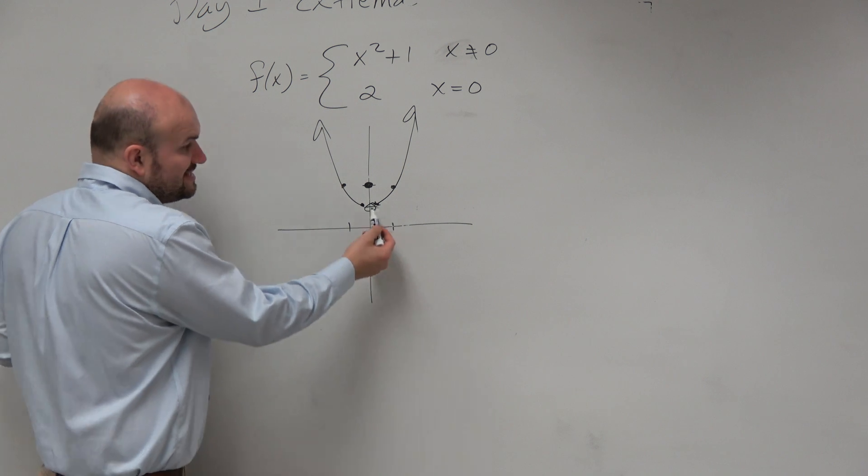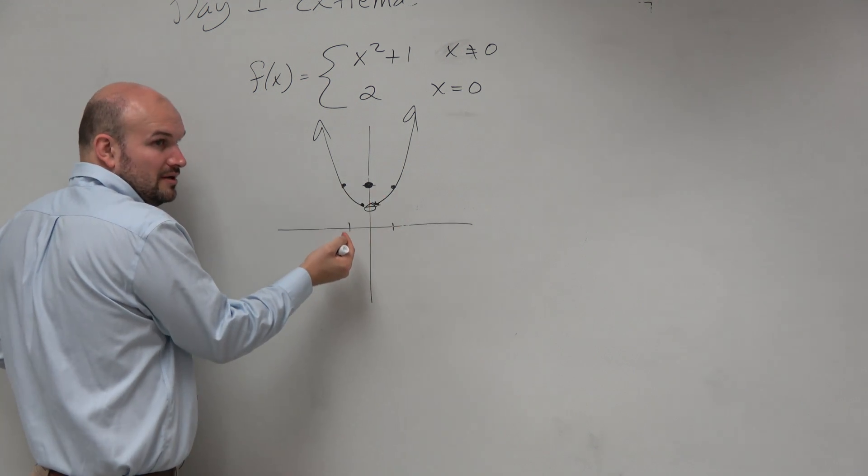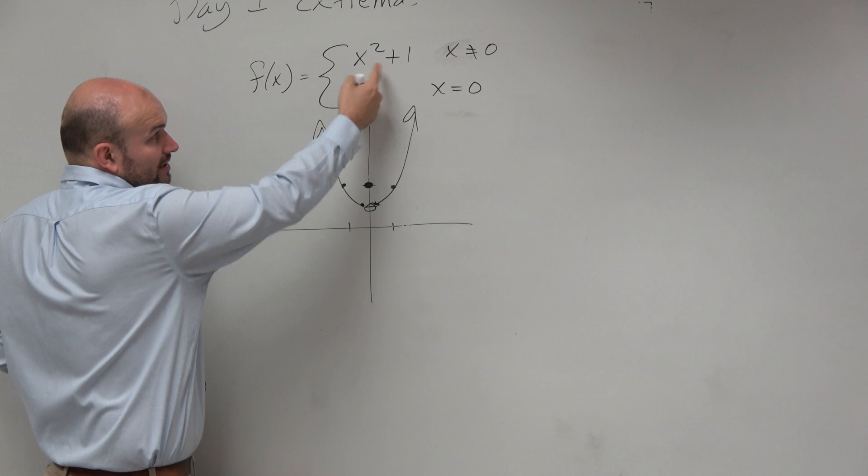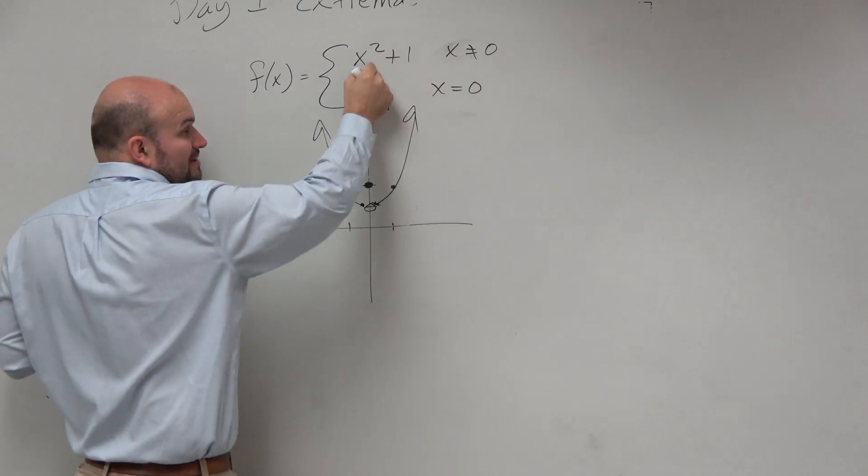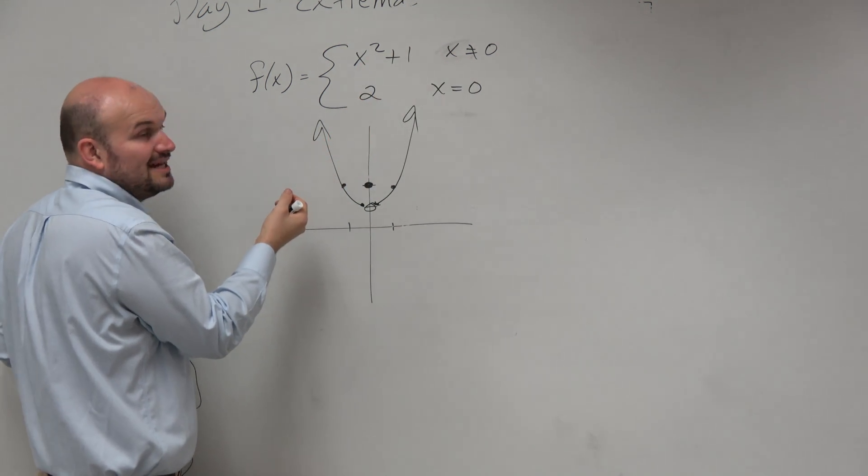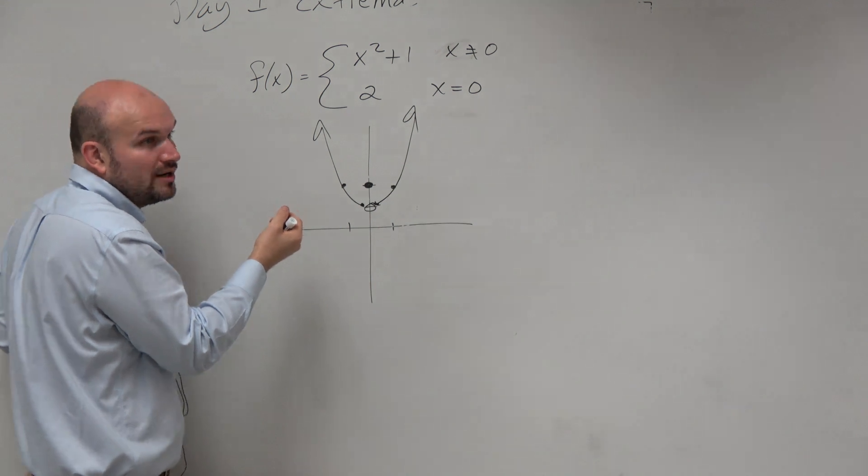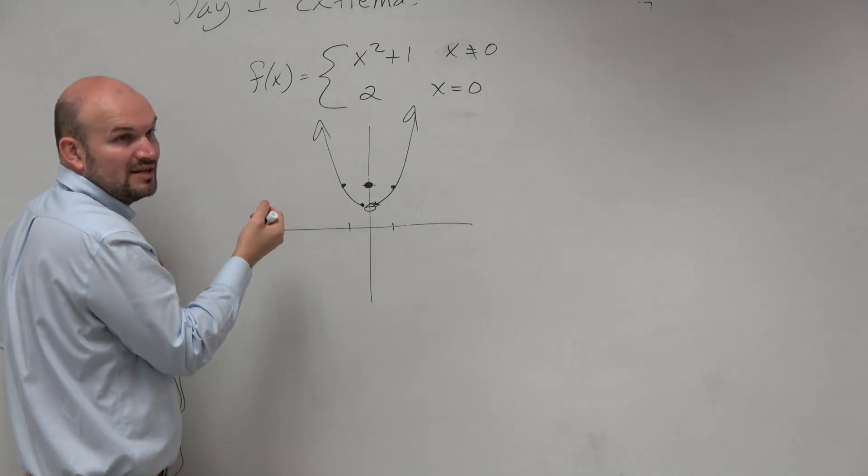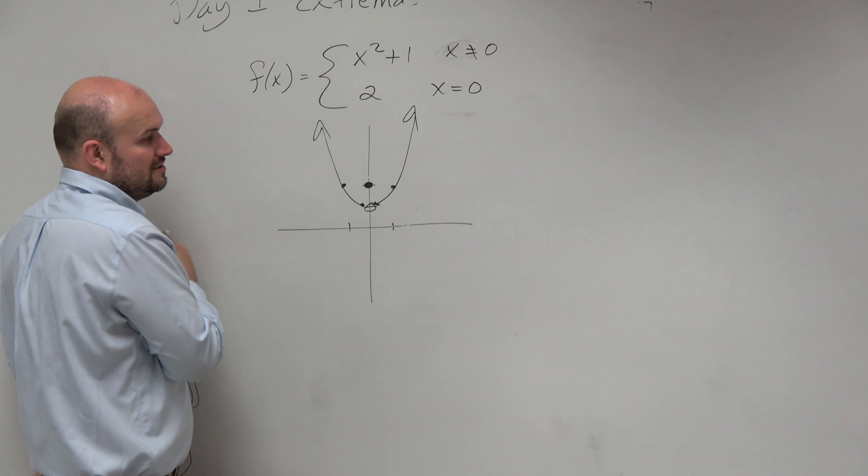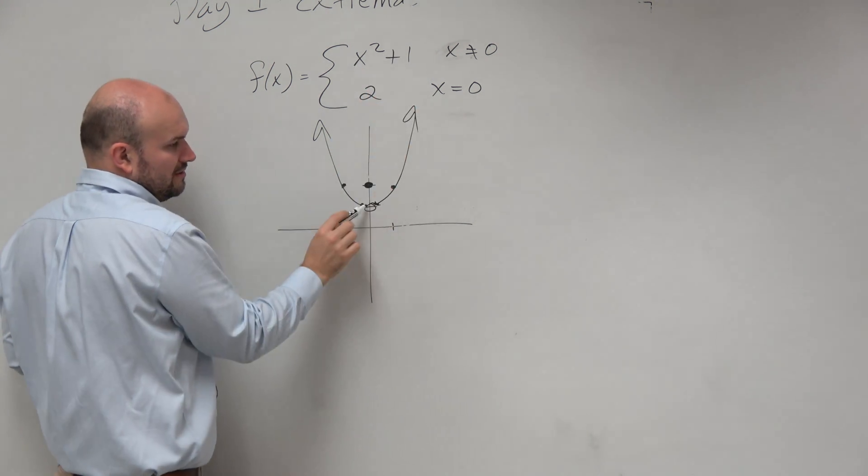So x equals 0, it actually never gets to that value. It never actually gets to 1. You can't plug in 0 into there to get 1. You can only plug 0.00001, or negative 0.99999999. So we can't get to that value there.